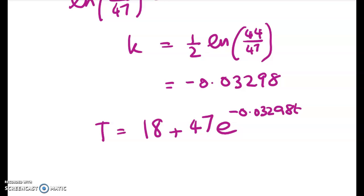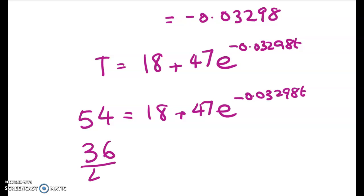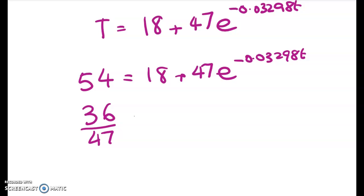And finally we have to figure out when Ben can drink the coffee. So he can drink the coffee when the temperature is down to 54. So the last thing we're solving for is a value of t. So we get 36 divided by 47 is equal to e to the power of this. We can take logs of both sides.